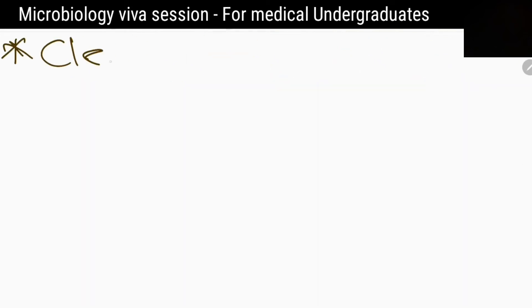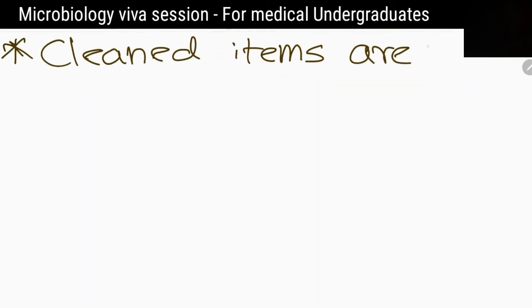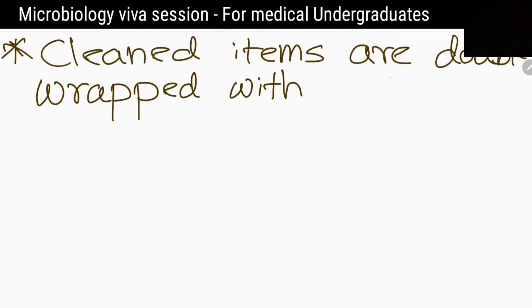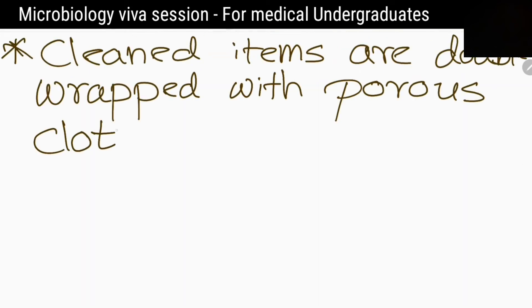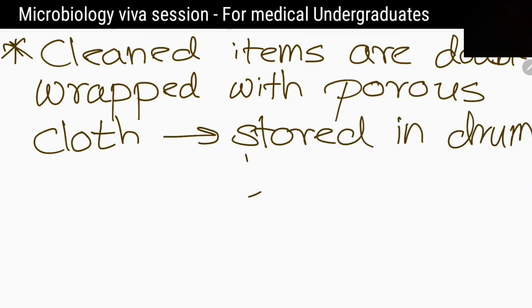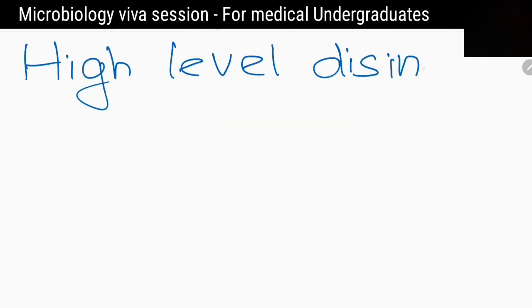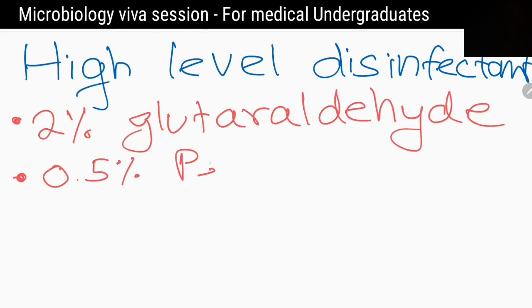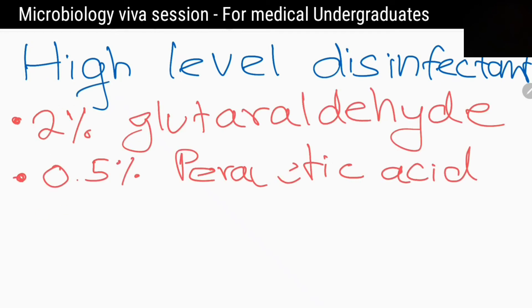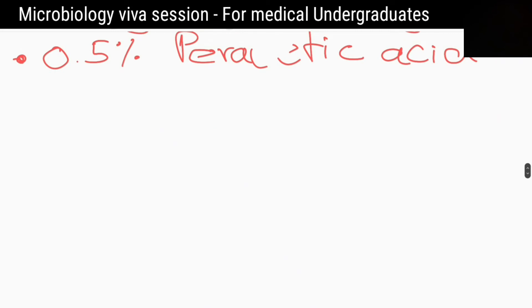The cleaned items are double wrapped with porous cloth then stored in a drum until used. What are high level disinfectants? 2% glutaraldehyde and 0.5% peracetic acid.